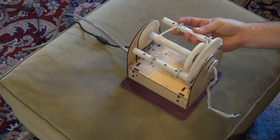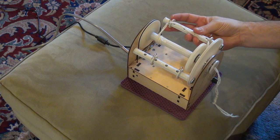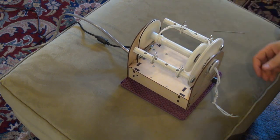Moving the yarn guides on the Electric Eel Wheel is very easy. You just slide them back and forth like this to where you want and you're good to go.